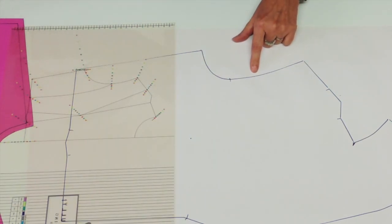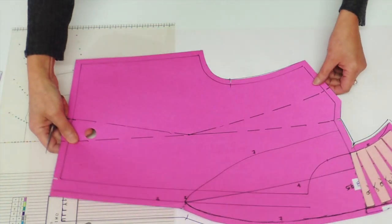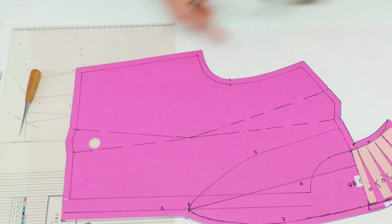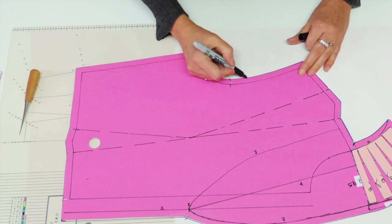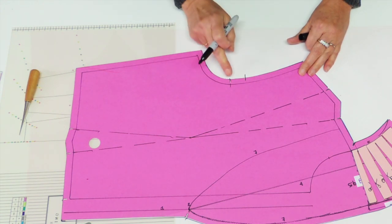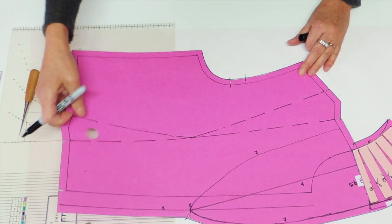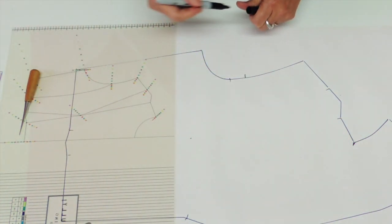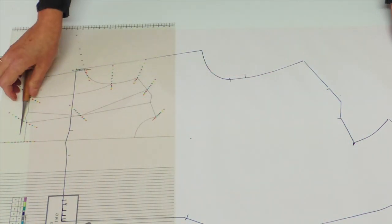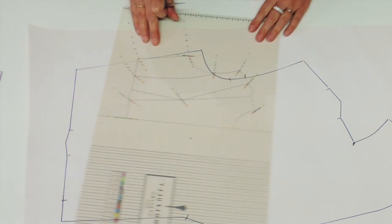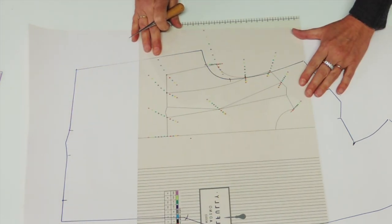Now before continuing, I'm going to ask you to take the bodice and indicate on the block and on the paper a point just a little higher than the notch. That's for the shoulder blade grading. It's to control the curve of your armhole. It's an extra point just to control the curve.